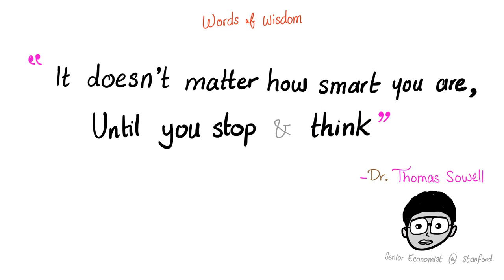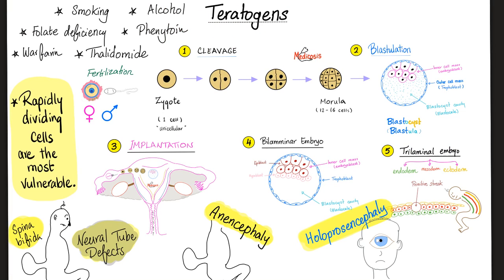Teratogens were discussed before. Rapidly dividing cells are most vulnerable to toxins such as smoking, alcohol, folate deficiency, phenytoin, warfarin, thalidomide, etc. That's why the baby is so vulnerable during pregnancy, especially during the first trimester, because the cells are dividing like crazy — the more rapidly dividing you are, the more vulnerable you are to these toxins. Don't forget that folate deficiency can cause neural tube defects such as spina bifida, meningocele, meningomyelocele, anencephaly, holoprosencephaly, etc.